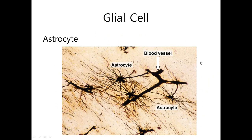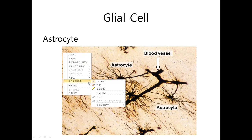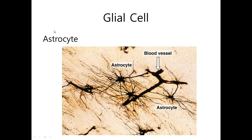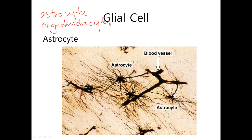Now, as we finish talking about neurons, let us talk about the glial cells. The glial cells, as I told you just before, mainly consist of three types: astrocyte, microglia, and oligodendrocyte. We just talked about oligodendrocyte when we were talking about the myelin sheath of neurons.